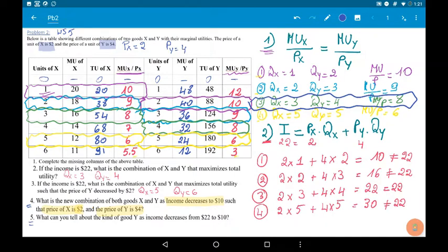Question 3 was regarding the change in price of Y, it was $2, we solved it, and the result, the combination that maximizes utility when the price of Y was $2 and the income was $22,